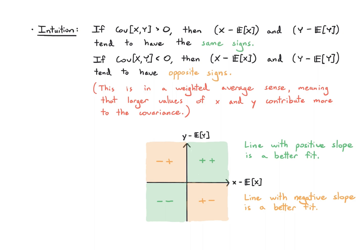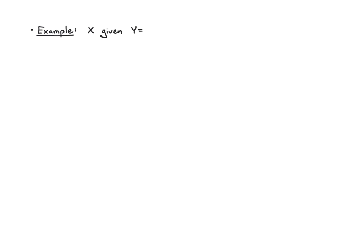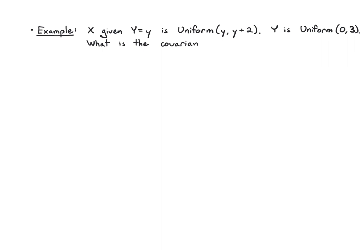If you spend more time in the green quadrants, a line with positive slope might do an okay job of fitting the relationship; similarly, for the orange quadrants, a negative slope might be better. Now let's work out a longer example. x given y equals y is Uniform between y and y plus 2, and y is Uniform(0, 3). What is the covariance of x and y?